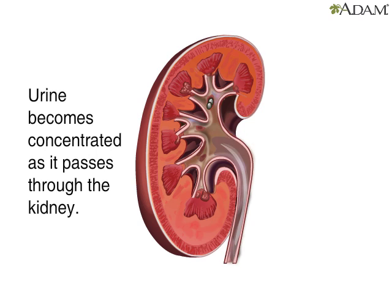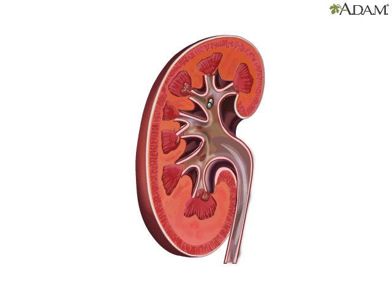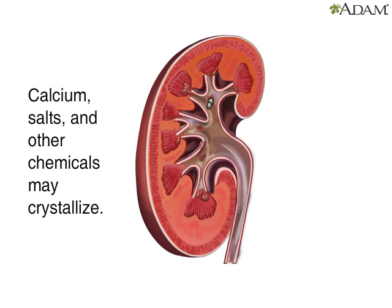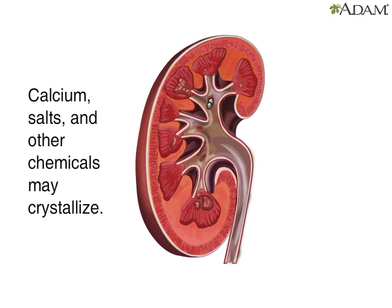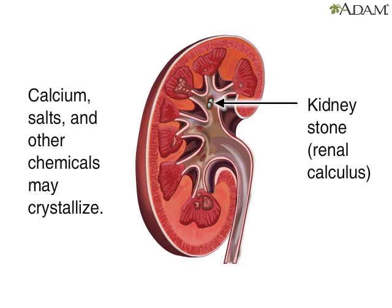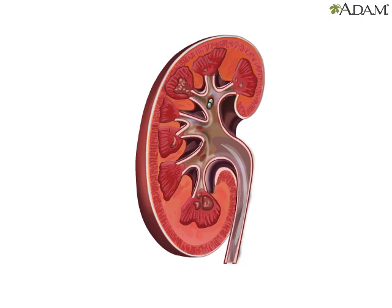As urine passes through the kidneys, it can become very concentrated. When the urine becomes too concentrated, calcium, uric acid salts, and other chemicals dissolved in the urine can crystallize, forming a kidney stone or renal calculus.